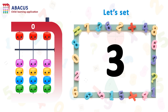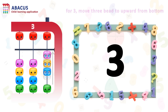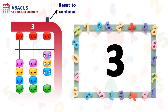Here we have the number 3. So let's set 3. For 3, we have to move 3 beads upward from the bottom on rod 1. Let's reset and go to the next number.